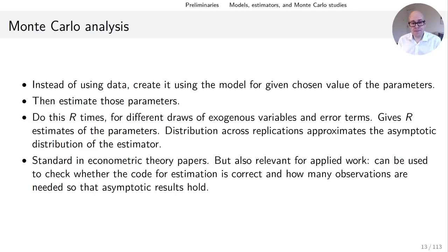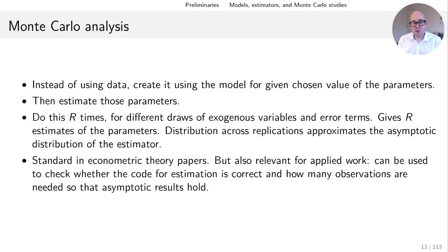The distribution of these R estimates across replications approximates the asymptotic distribution of the estimator. This is standard in econometric theory papers: a paper proposes a new estimator and then uses Monte Carlo analysis to show it works and that asymptotic results approximate finite sample properties well.